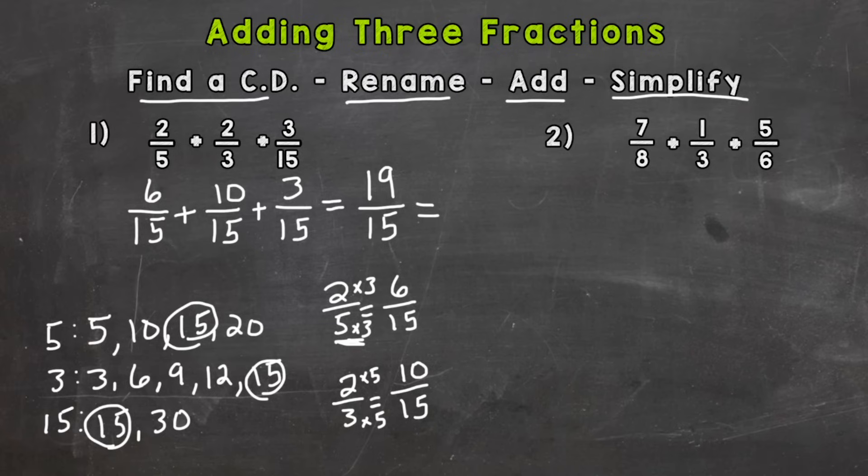So in order to do this we need to do 19 divided by 15. So how many whole 15s can we pull out of 19? Well one whole 15. That's our whole number of the mixed number. Now it didn't hit 19 exactly so we have something left over. If we pull a 15 out of 19 we get a remainder of 4. We have 4 left over. And we keep our denominator of 15 the same. So our final answer is 1 and 4 15ths.